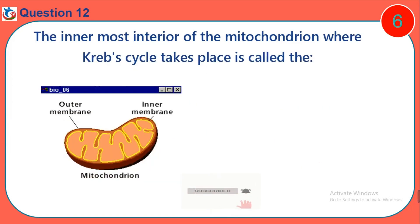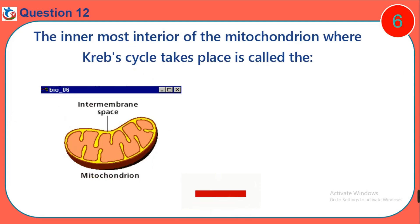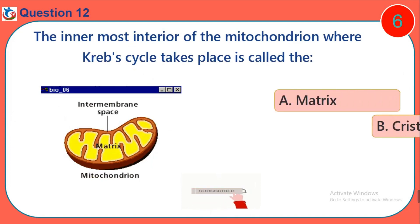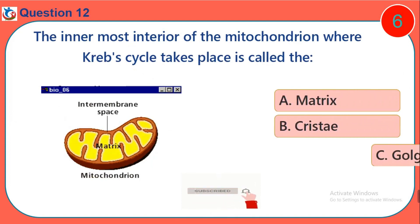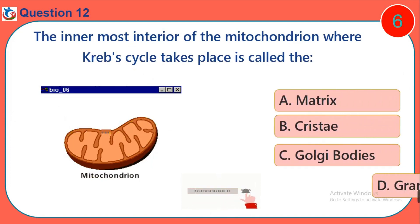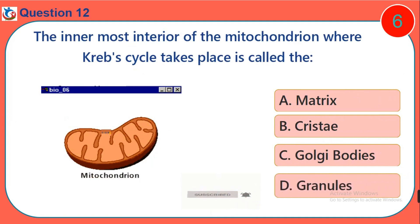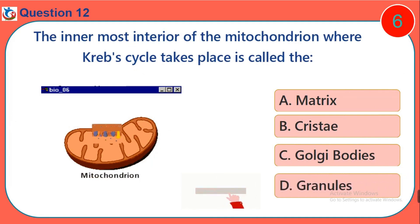Question 12. The innermost interior of the mitochondria where the Krebs cycle takes place is called the: A. Matrix. B. Cristae. C. Golgi bodies. D. Granules.